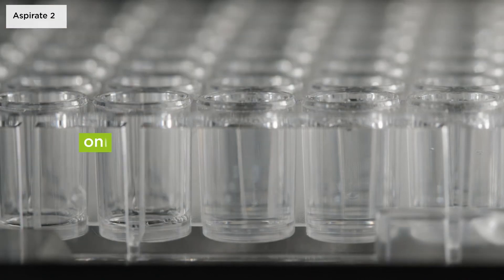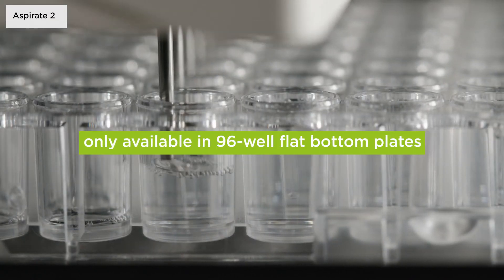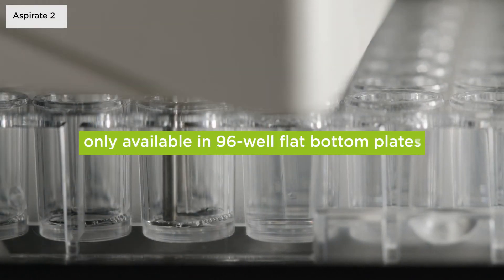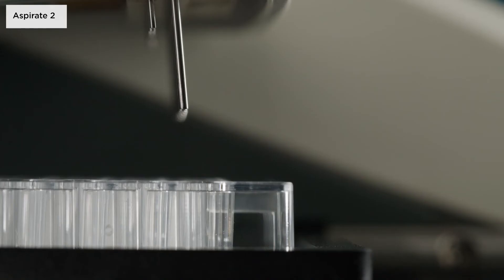Crosswise aspiration is only available in 96 well flat bottom plates, where a second aspiration position can be defined, typically close to the front of the well to reduce the residual volume.